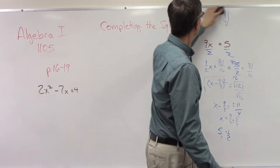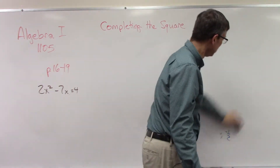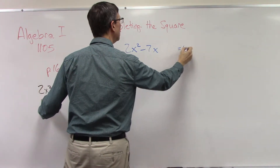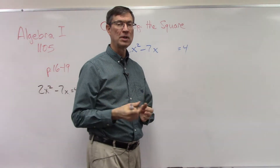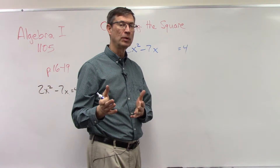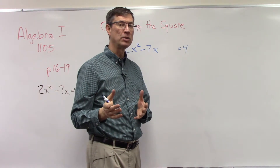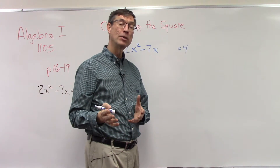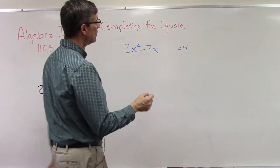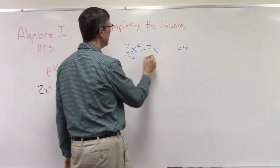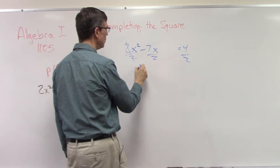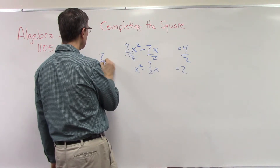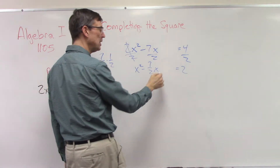Now let's take one problem from your homework and get you started. Actually, it'd be a good idea to take this problem, write it down, stop the video and try to solve it — see how far you can get. Okay, are you back? Let's see how far you got. We have an x squared coefficient in front, so we first divide everything by that number. That gives us x squared minus seven-halves x equals — and I can simplify the right side to just 2.